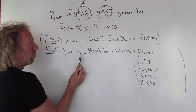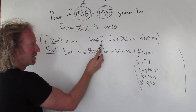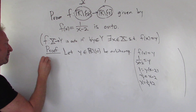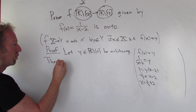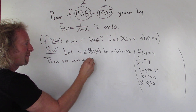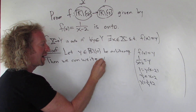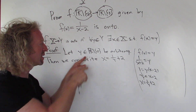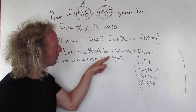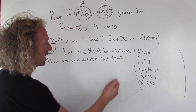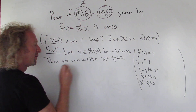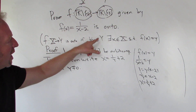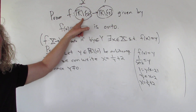We start the proof by letting little y be arbitrary in this set. Now we have to show the existence of little x. We can write little x equals 1 over y plus 2 — we can write this because y is not 0, since y is in the set of real numbers minus zero, so it won't be 1 over 0. We write that since y is not 0.